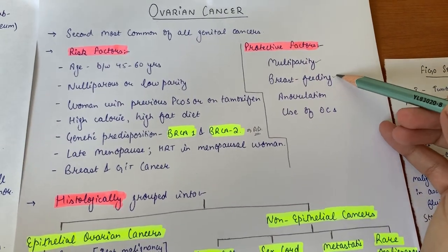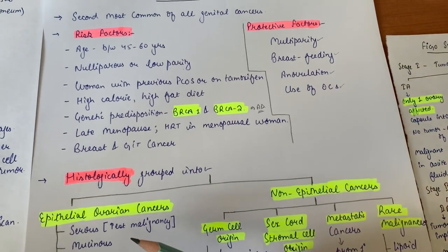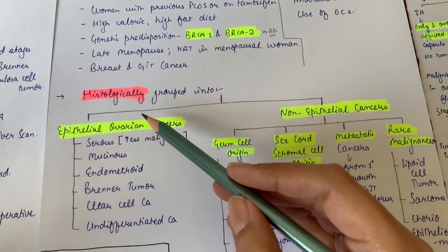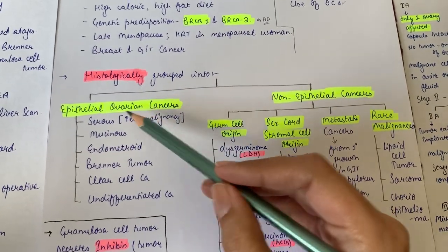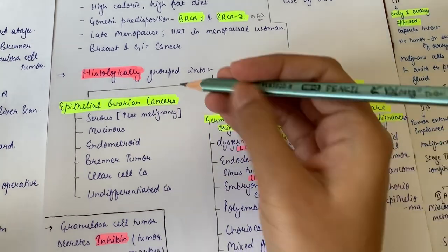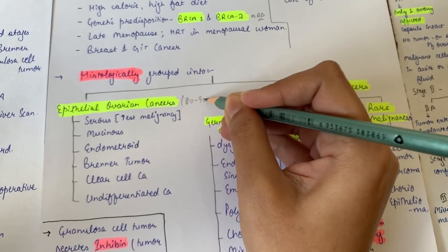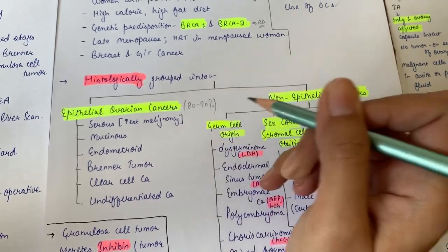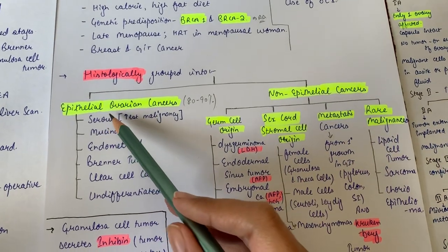For classification, histological classification of ovarian cancer is available. Histologically they're grouped into epithelial ovarian cancers and non-epithelial ovarian cancers, but the majority of cancers are epithelial, usually 80 to 90 percent of ovarian carcinomas are epithelial in origin and the rest are non-epithelial.